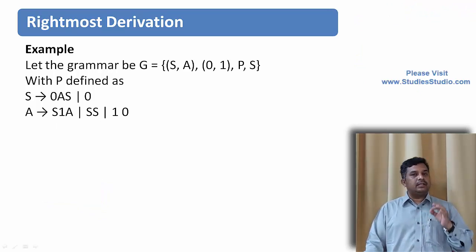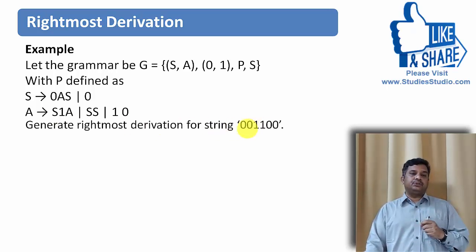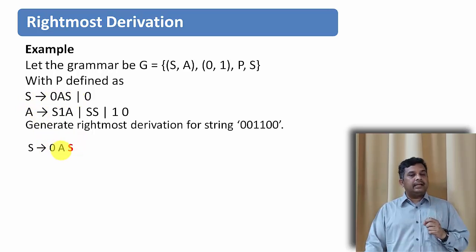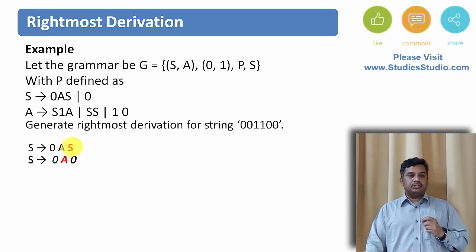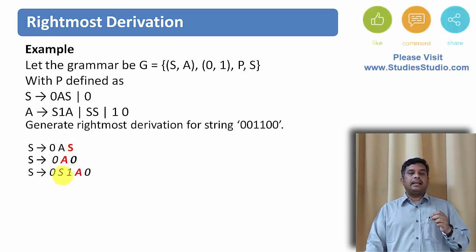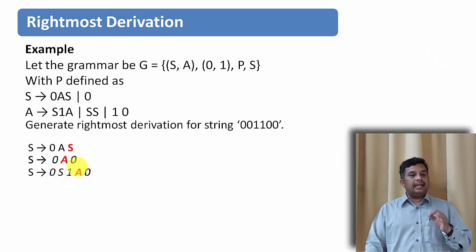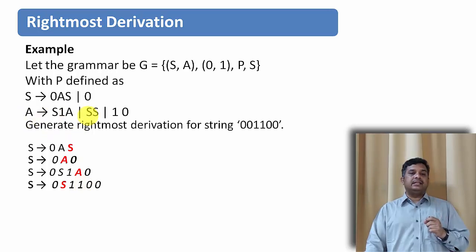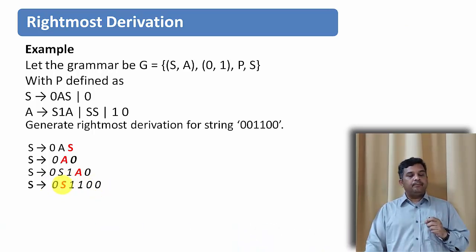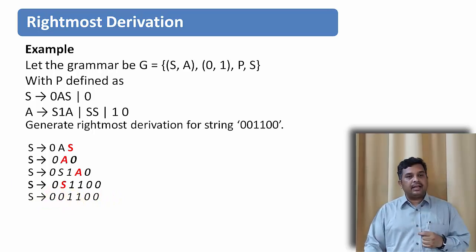Now let us understand rightmost derivation using the same example to derive 001100. Starting with S, we apply S→0AS. Here S is the rightmost variable, so we substitute S→0, giving 0A0. Now the only variable is A; applying A→S1A, we get S1A. A is the rightmost variable, so A→01 gives S1100. Finally S is the only variable; substituting S→0 gives us the derived string 001100.